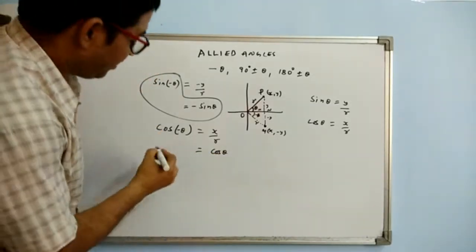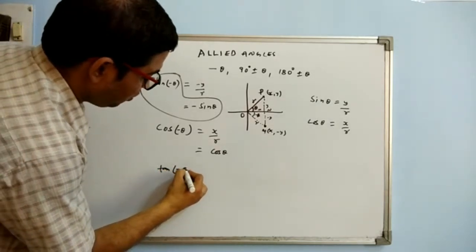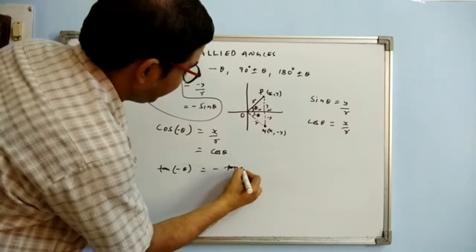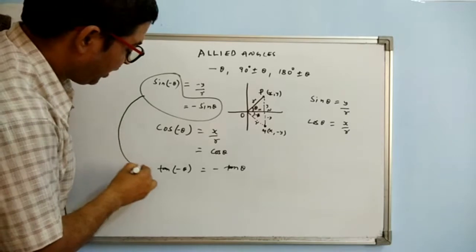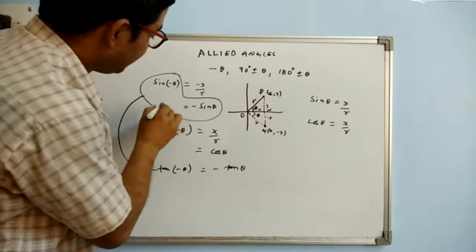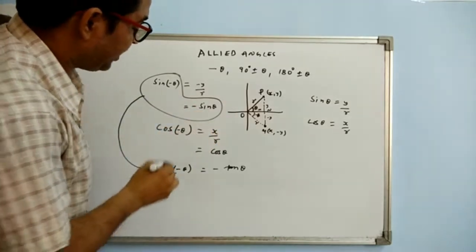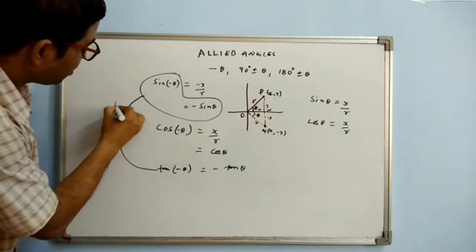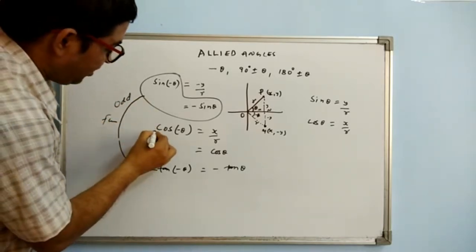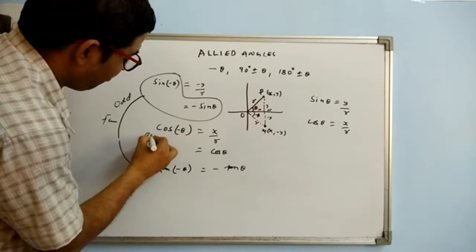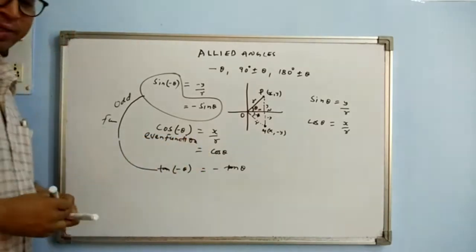In the same way, tan of minus theta equals minus tan theta. Remember that any trigonometrical ratio involving sine will be negative for minus theta — sine is called an odd function, while cosine is called an even function. So the minus sign rule is clear.